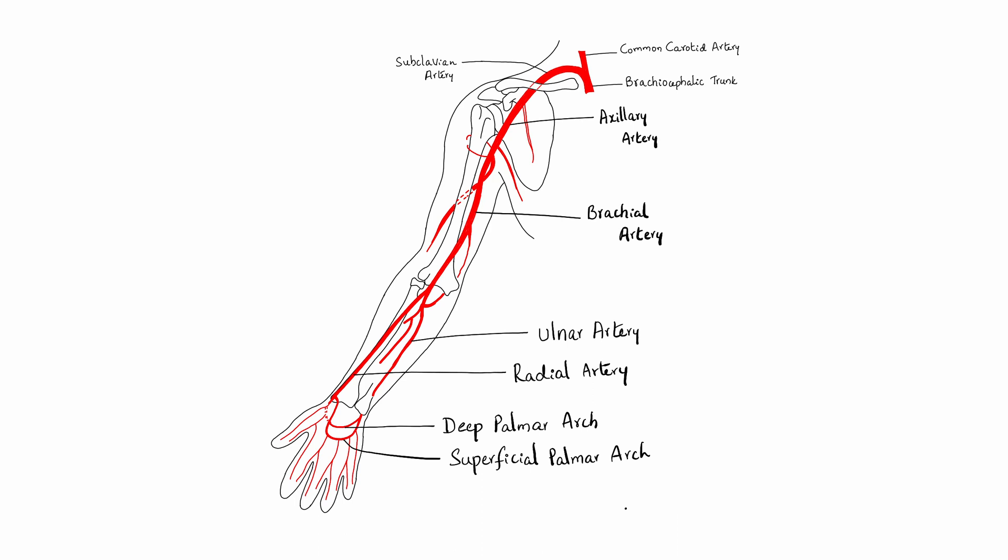The superficial veins of the upper limb originate from the dorsal venous arch of the hand. The lateral end of the dorsal venous arch forms the cephalic vein, which runs along the lateral aspect of the upper limb and terminates into the axillary vein at the axilla. The medial end forms the basilic vein, which ascends along the medial aspect of the upper limb and also empties into the axillary vein. Anterior to the elbow, the cephalic vein is connected to the basilic vein via the median cubital vein.